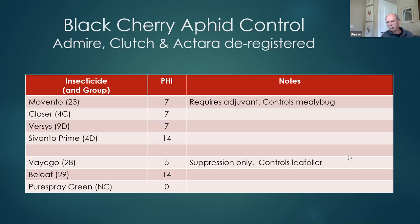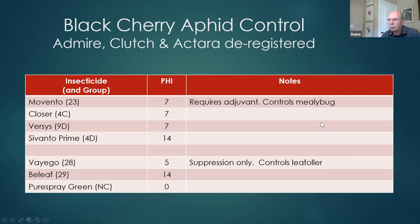Those are our four main products for aphid control if we needed to take action early to mid-season. Viego does provide some suppression for black cherry aphid though it isn't labeled for control. Belief remains relatively weak against black cherry aphid. Pure Spray Green Oil, which we may use for powdery mildew control mid-spring, could also provide some control of black cherry aphid.